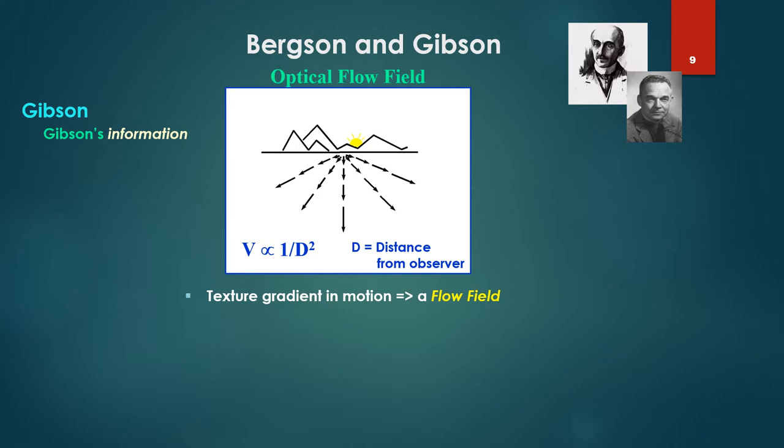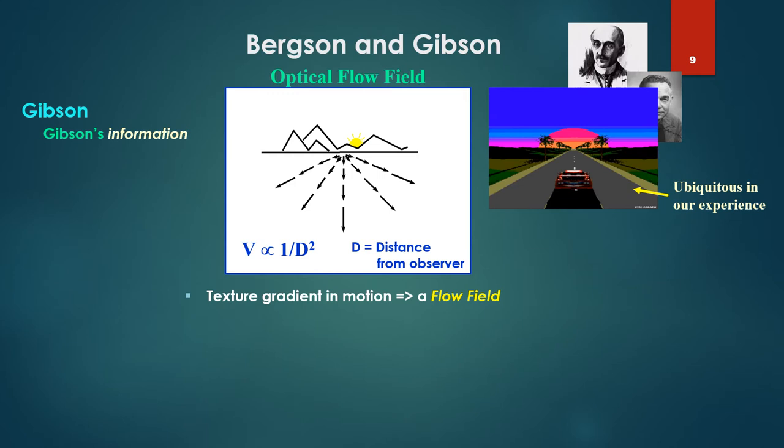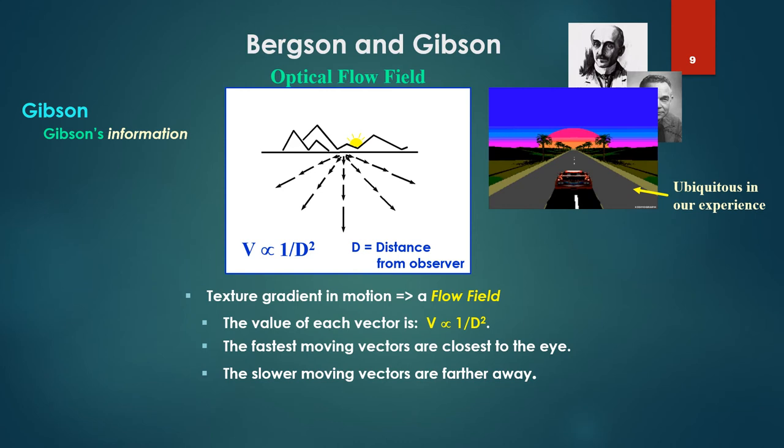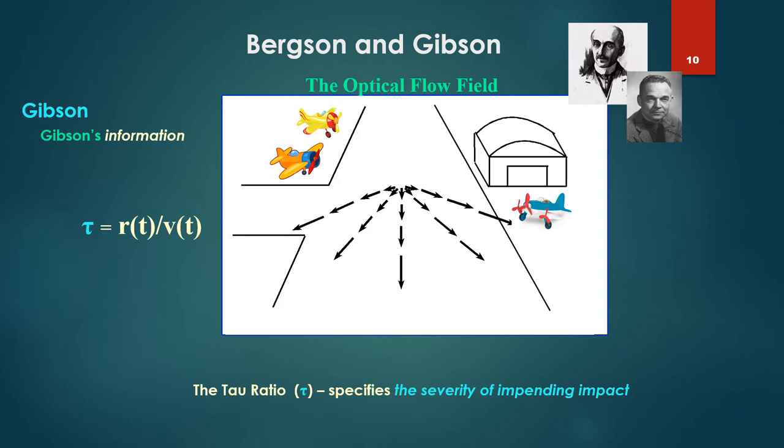If we put this gradient in motion, the texture gradient in motion, we get what's termed a flow field. Again, ubiquitous in experience as we walk or drive down the road. Now the vectors there, streaming towards us, have a value. The value of each vector, or velocity value, is proportional to one over the distance squared, d being the distance from the observer. In other words, the fastest moving vectors are closest to the eye, the slower moving vectors are farther away, so smaller arrows.